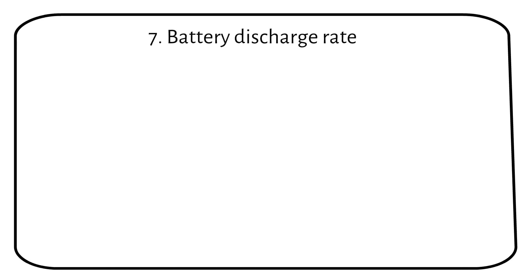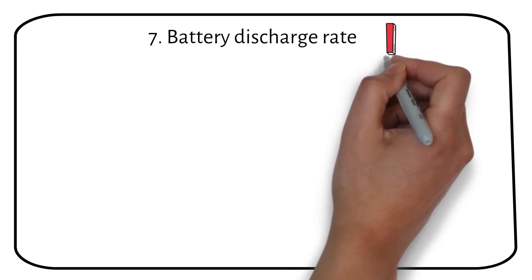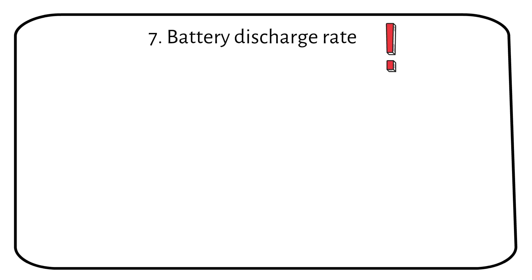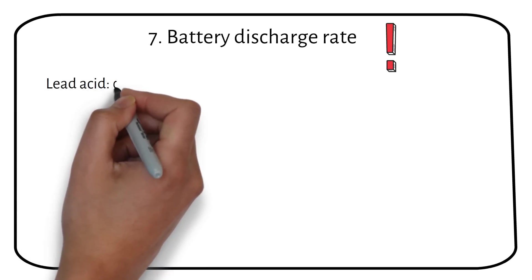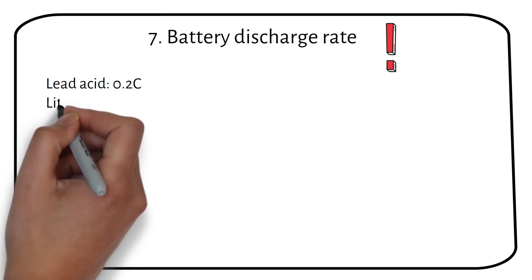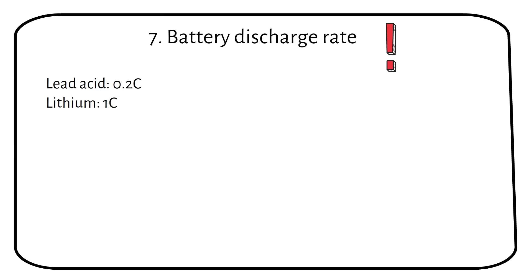The last mistake on the list, but the one which I see happen a lot, is not respecting the discharge rate of a battery. Different battery types have specific charging and discharge rates, which are crucial to maintain optimal performance and longevity of the battery. Lead-acid batteries typically have a discharge rate of 0.2C, while lithium batteries can handle a discharge rate of 1C.